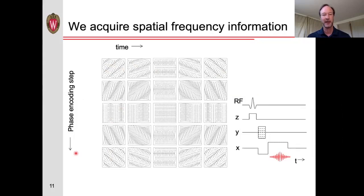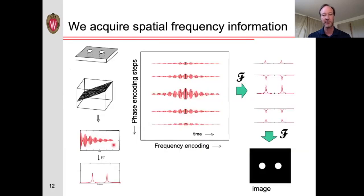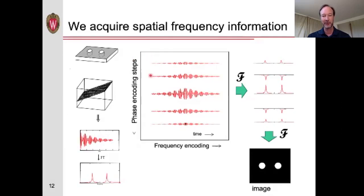I ended the lecture on MRI basics image formation with this figure here, showing how the magnetization vectors are twisted up by the frequency encoding along the x-axis, and by the different phase encoding steps along the y-axis. So putting this together, if we have multiple different phase encoding steps, if we look at the frequencies within each of these echoes, we can find out where the signal is coming from in the x-direction. And similarly, if we look at the frequencies across all the different phase encoding steps, we can find out where the signal is coming from in the y-direction.